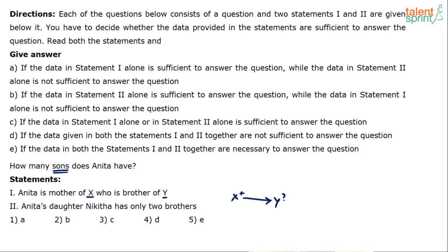If Y is sister then we can say only one son. Maybe only one son again, because there can be more people for which the data is not known. And if Y is male then two sons. Anyway, Statement 1 is not sufficient.